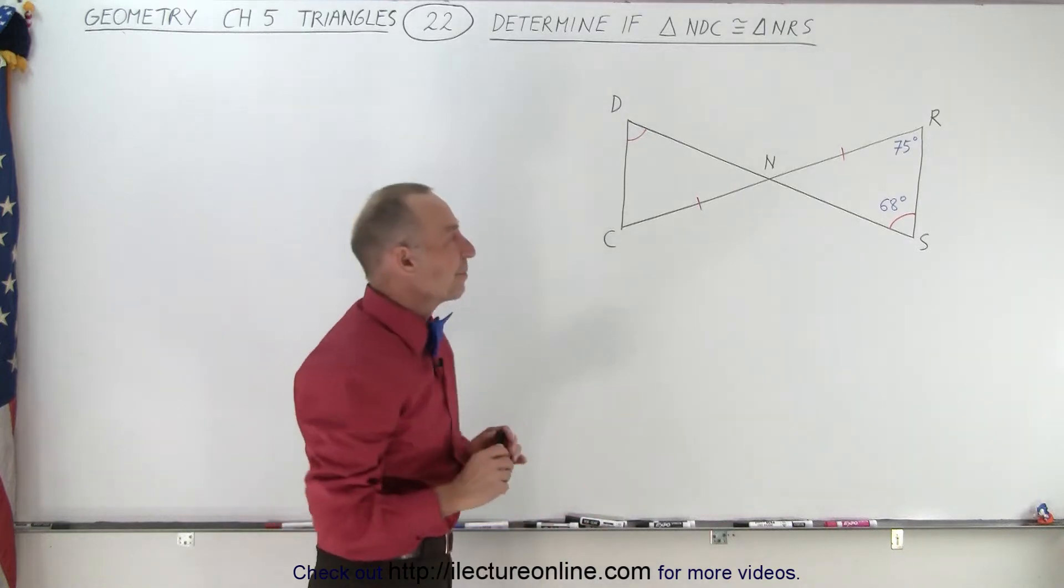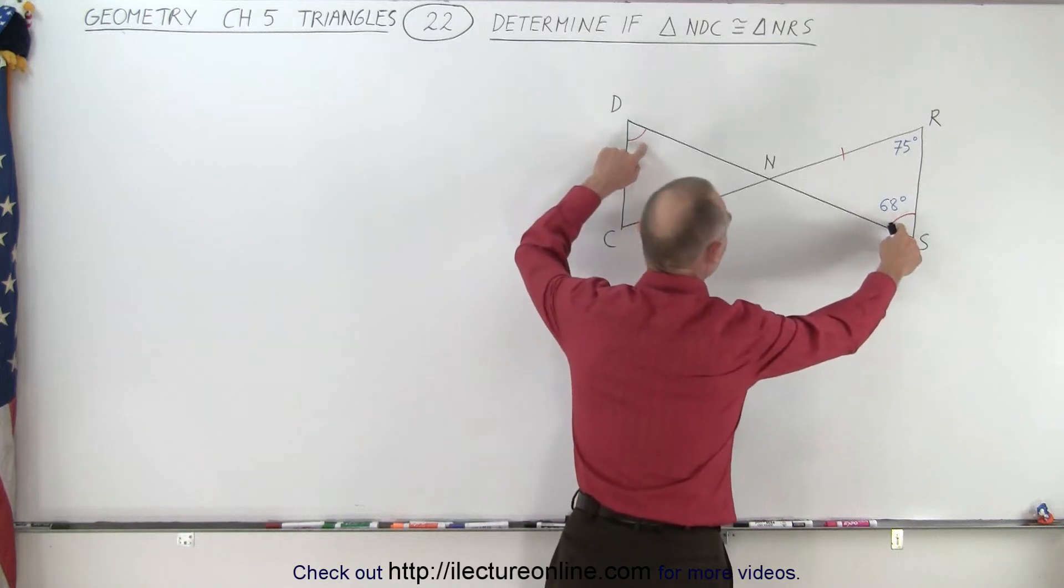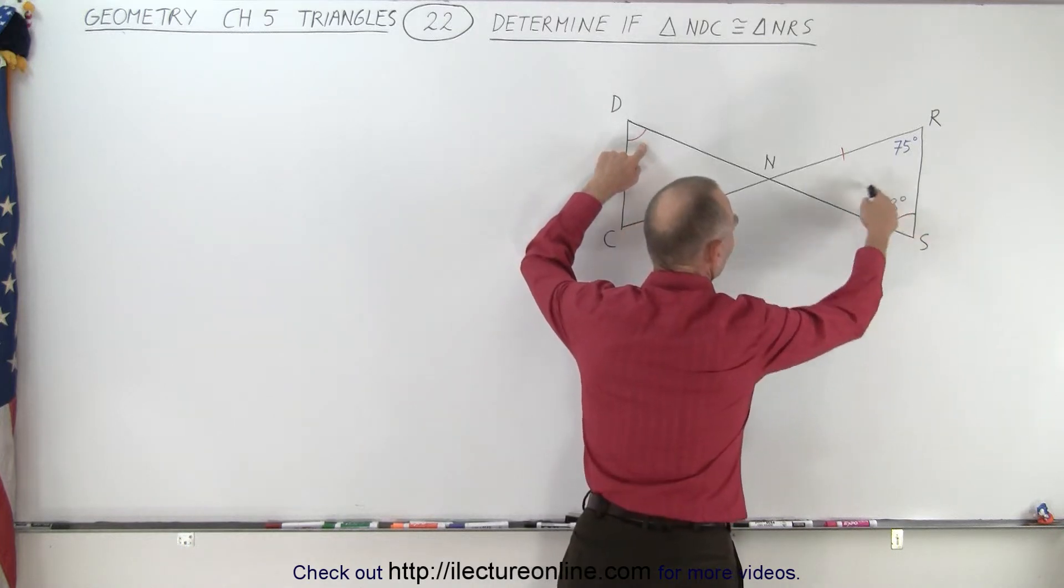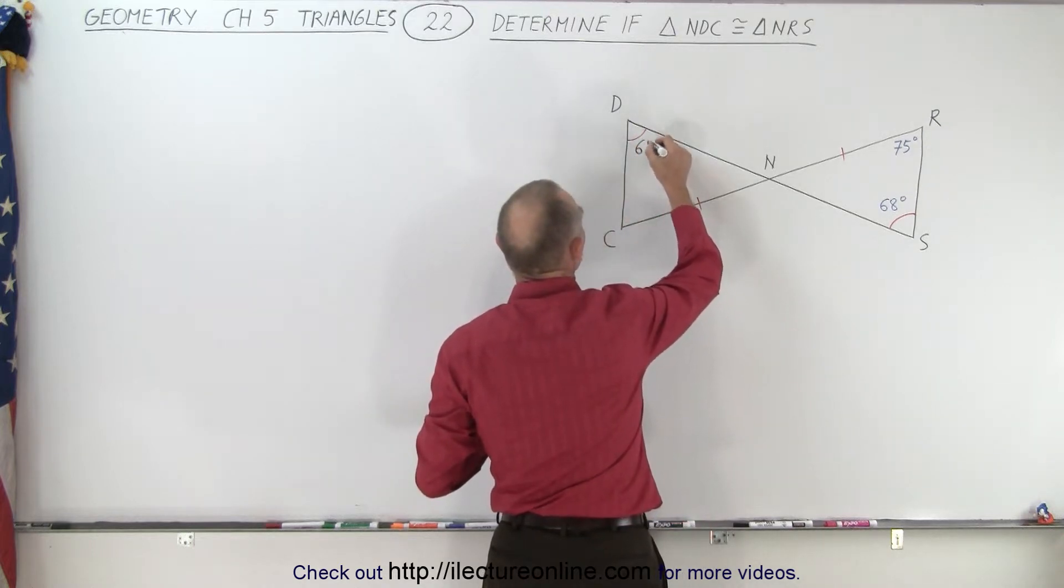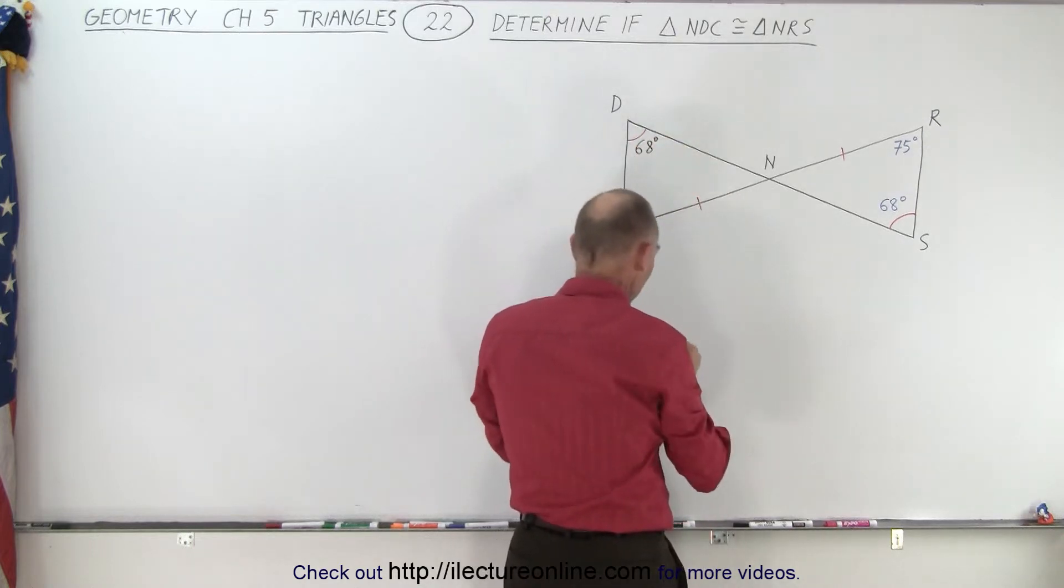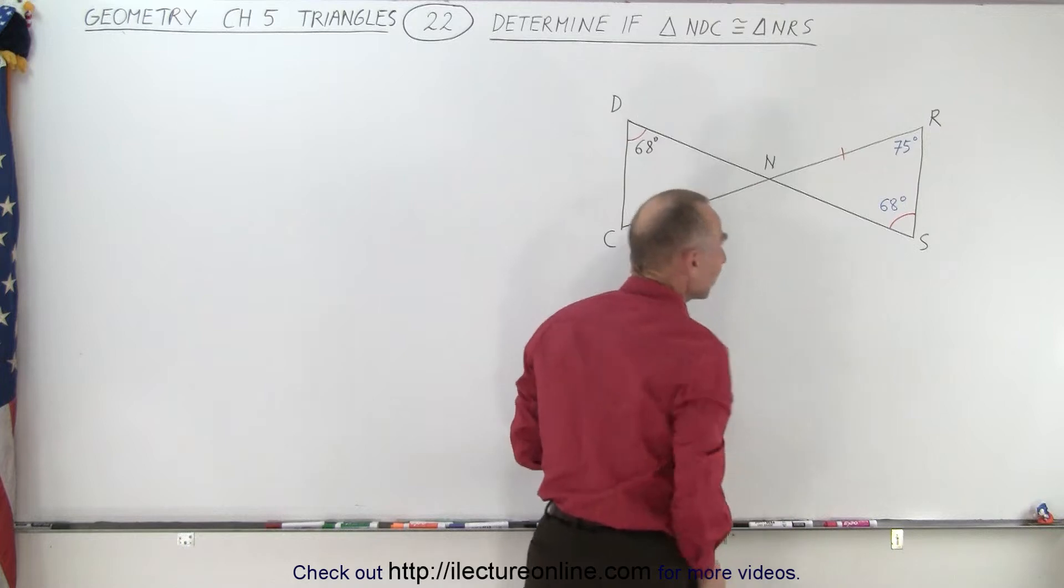They do give us some information. They tell us that these are corresponding angles and they have the same measure. So since this one has an angle of 68 degrees, that means this one must have an angle of 68 degrees as well. They also tell us that these two sides are corresponding sides and they have the same length, indicated by the single line.